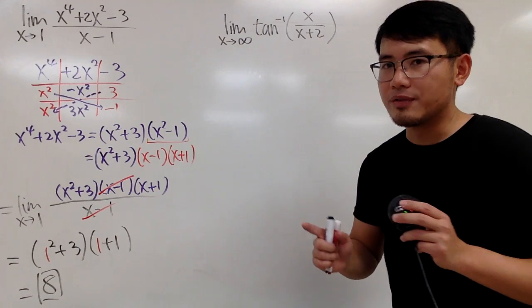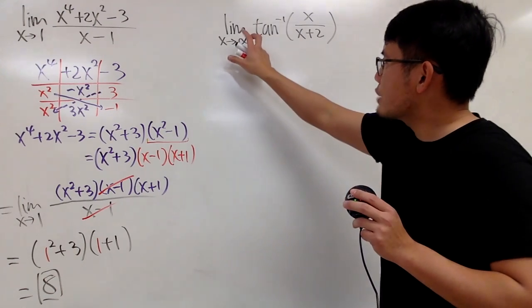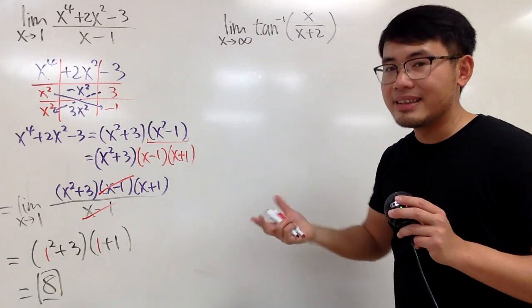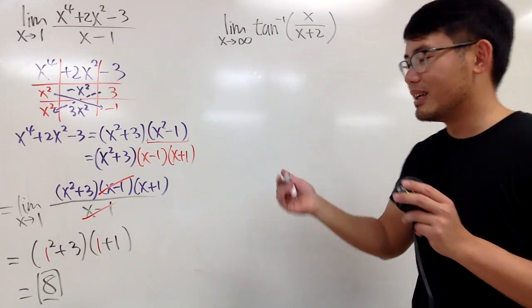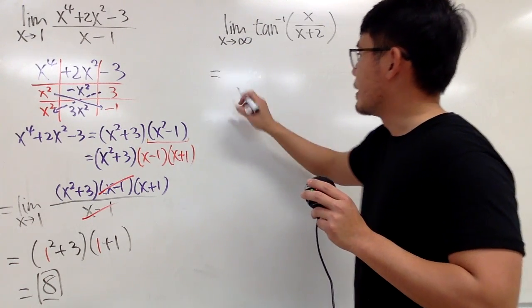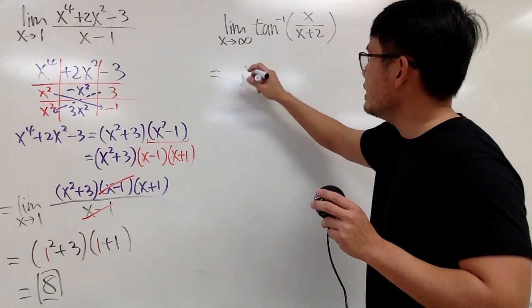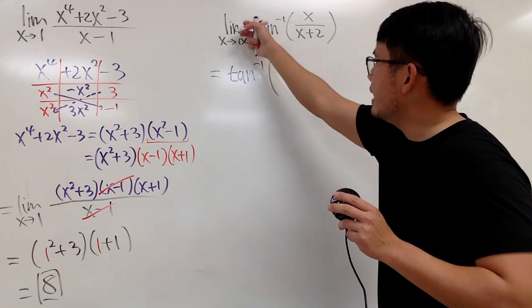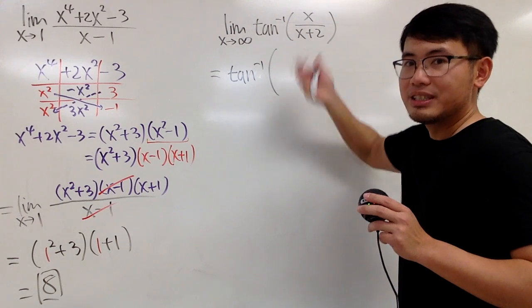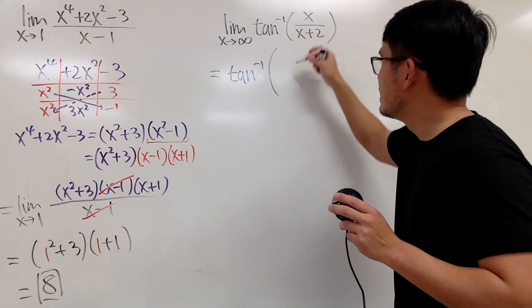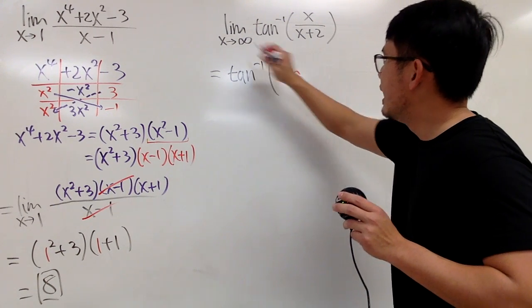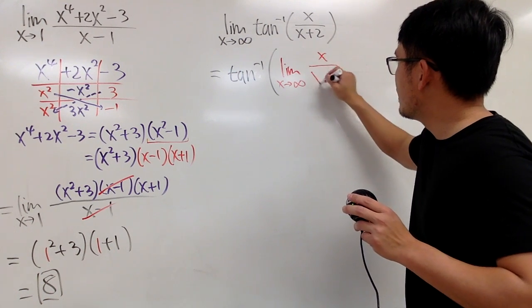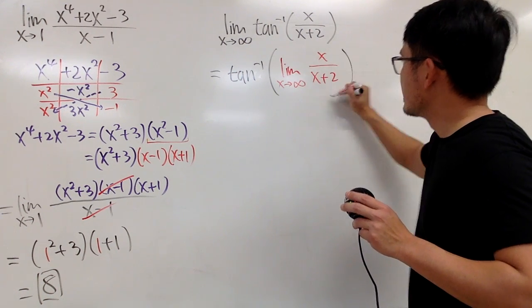First of all, inverse tangent is a continuous function. So, what you're actually doing is, you can just look at the limit of the inside first. And then, take the inverse tangent of the result. So, in notation, I'll write it down like this. We are looking at the inverse tangent of, we take the limit of this part first, inside out. Right? So, we look at the limit as x approaching infinity. And this is x over x plus 2. Like this.